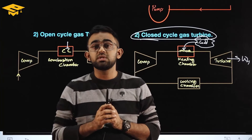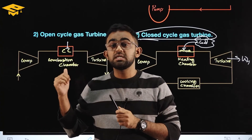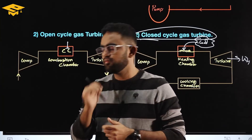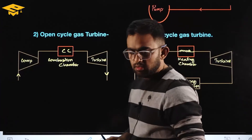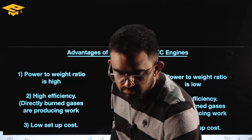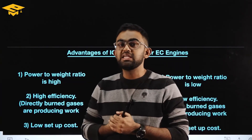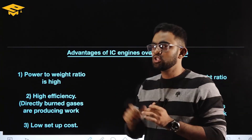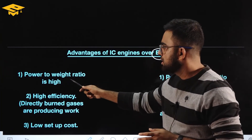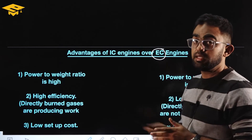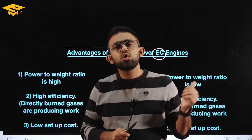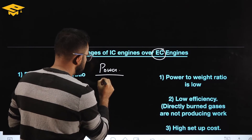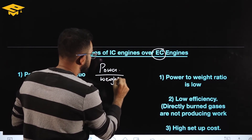Now let's see the advantages of IC engines over EC engines. The first advantage is that the power-to-weight ratio is high in IC engines. At the same time, the power-to-weight ratio is less in EC engines. Power-to-weight ratio means power divided by the weight of the power-producing system.